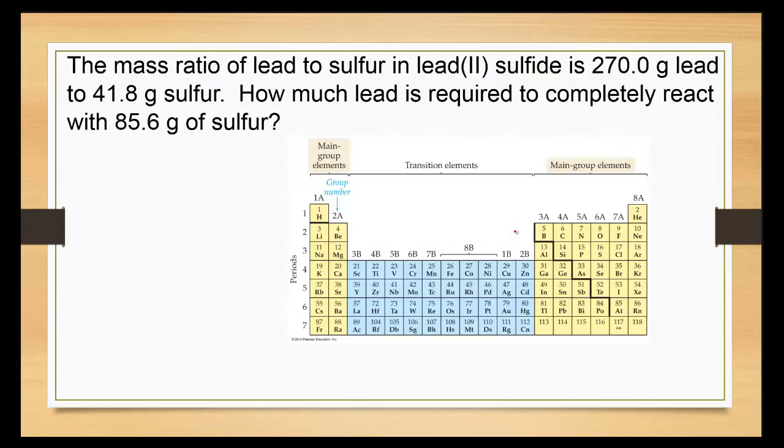So let's do a practice problem with this. The mass ratio of lead to sulfur in lead sulfide is 270 grams of lead to 41.8 grams of sulfur. How much lead is required to completely react with 85.6 grams of sulfur?